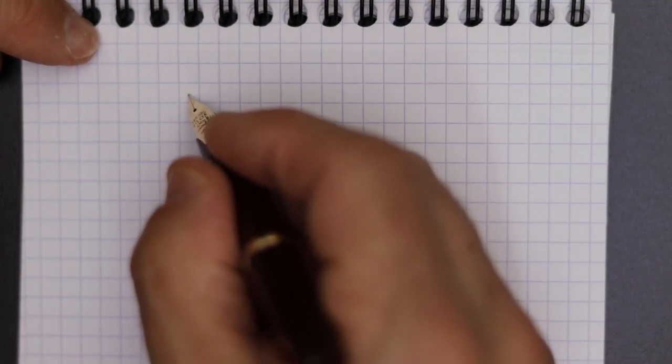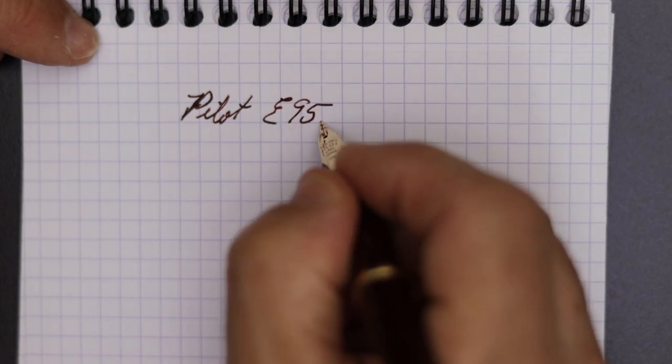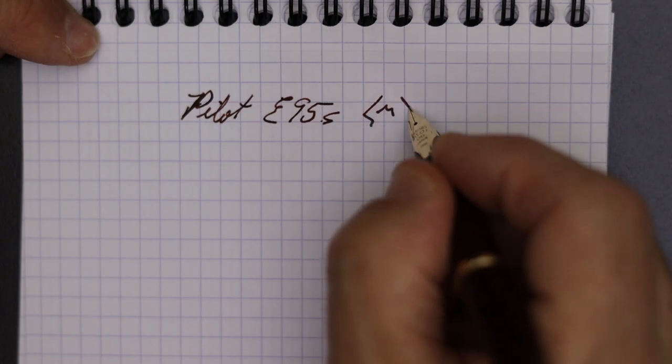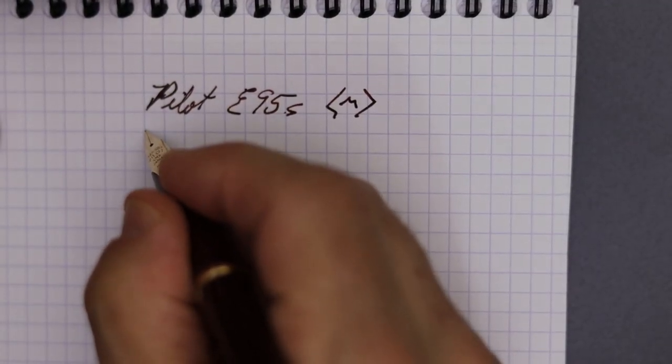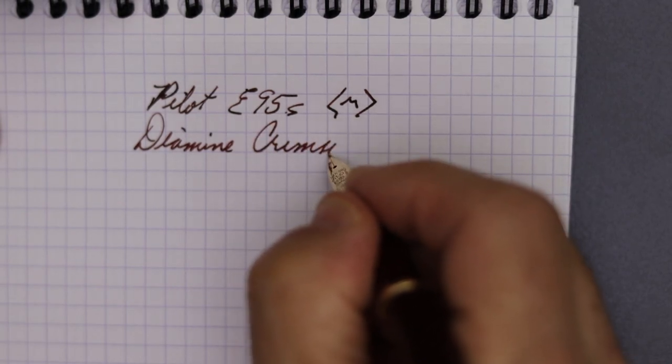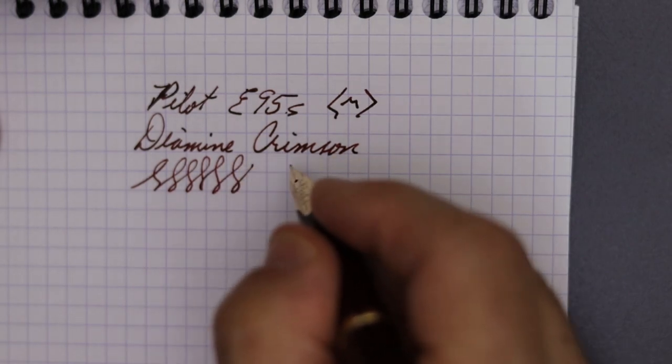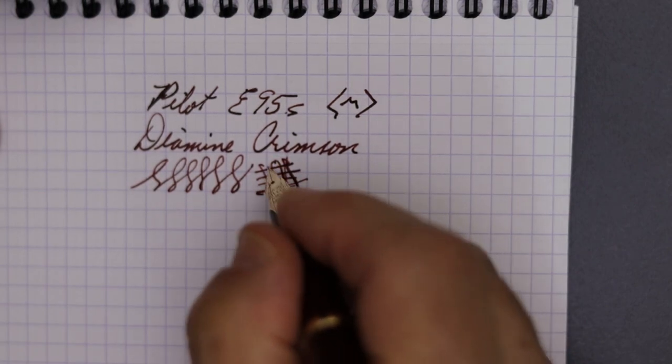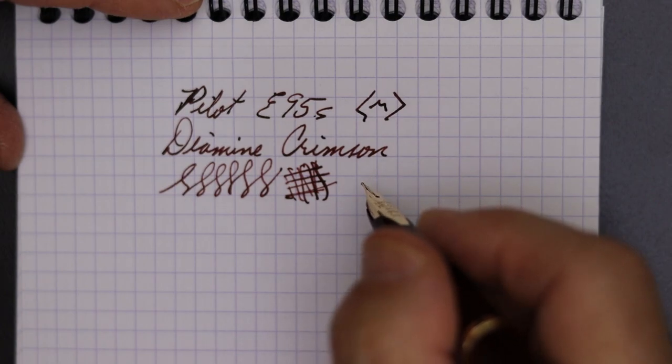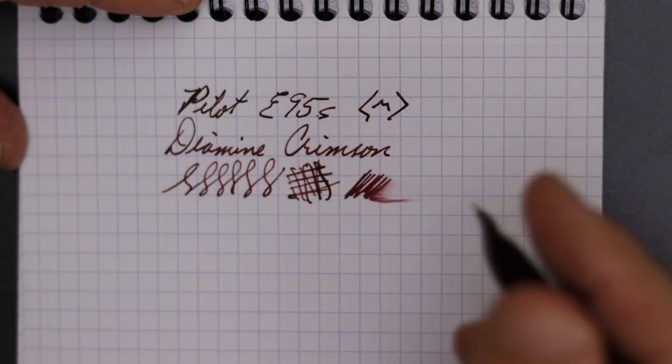All right, here's a writing sample of the Pilot E95S. There was a little bit of hard start, but that's just because I've been writing uncapped there. And this is a medium nib. The ink that I am using is Diamine Crimson. All right, again, flow is nice, very smooth pen. No scratchiness, whatever direction you want to write. Wait, this is a wonderful writing pen. It is just so smooth, as far as wetness. Not too bad at all.